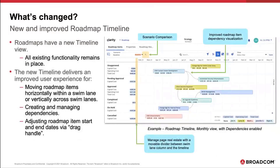So, what's changed? Roadmaps have a new timeline view. All existing functionality remains in place, but the new timeline delivers an improved user experience for moving roadmap items horizontally within a swim lane or vertically across swim lanes, creating and managing dependencies, and adjusting roadmap items' start and end dates with an easy-to-use drag handle. There's also a new control to manage real estate with a movable divider between the swim lane column and the timeline itself.